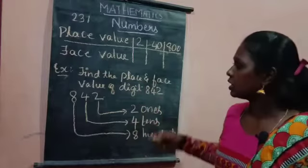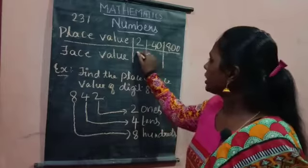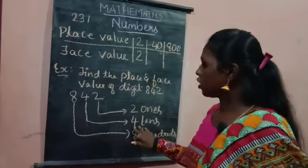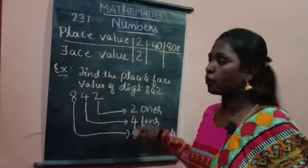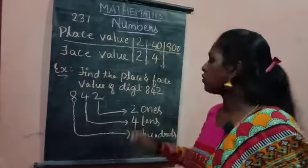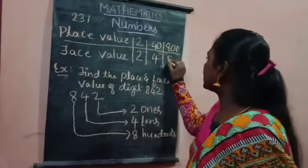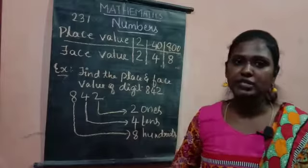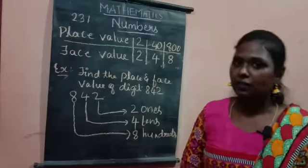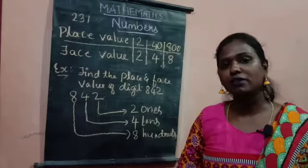Now for face value: the face value of two is two itself, the face value of four is four itself, and the face value of eight is eight itself. I hope you understood these two topics — place value and face value. Thank you so much for watching the video.